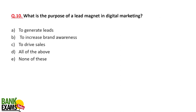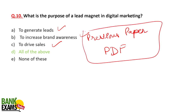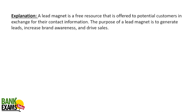What is the purpose of a lead magnet in digital marketing? To generate leads, create brand awareness, and drive sales. We will be providing the previous paper PDF. The goal is to create brand awareness so people know what we do. Sometimes we give you a PDF and get your email ID, then send you emails for our courses — that's very common.